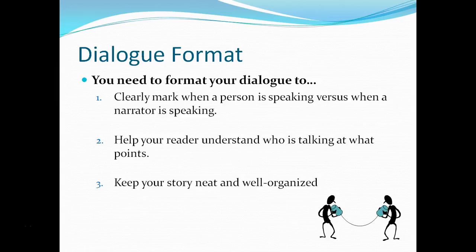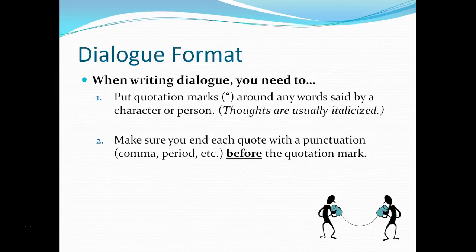When we write dialogue, there are five formatting rules to follow. First, we put quotation marks around any word said by a character or person, so it's very clear when the characters or people are speaking as opposed to the narrator. However, thoughts are usually italicized. Second, we make sure we end each quote with a punctuation before the quotation mark. That's just general grammar rules, which we'll talk about later.